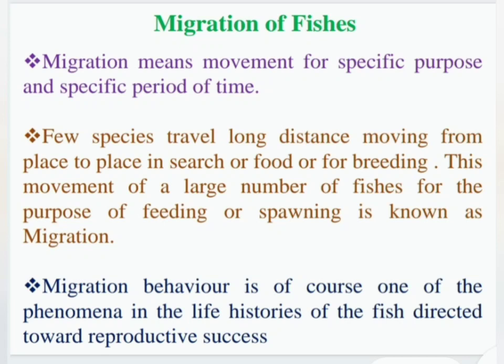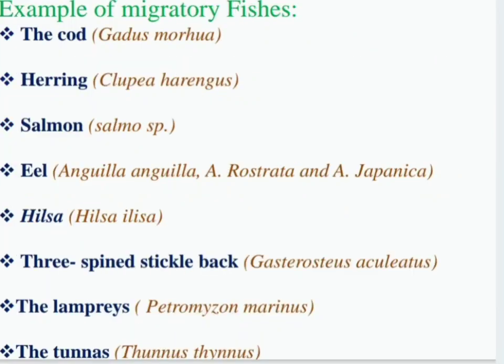Examples of migratory fish include: Clupea, Salmon, Anguilla, Anguilla Rostrata, Hilsa, Gasterosteus Aculeatus, Petromyzon Marinus, and Thunnus.